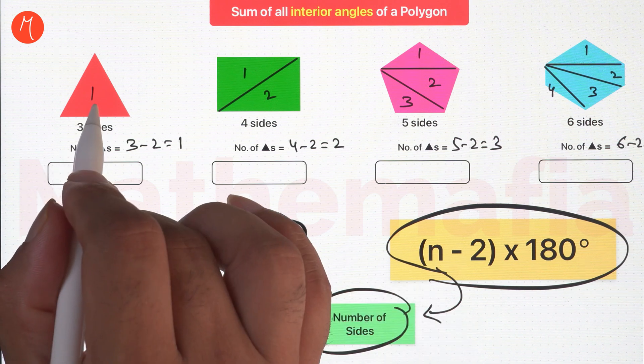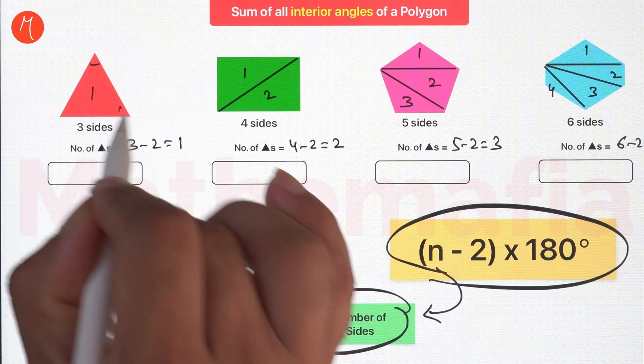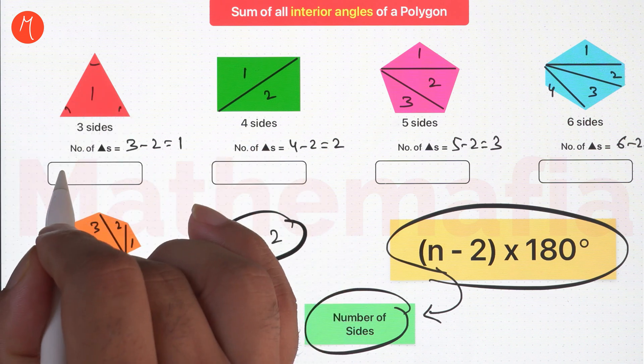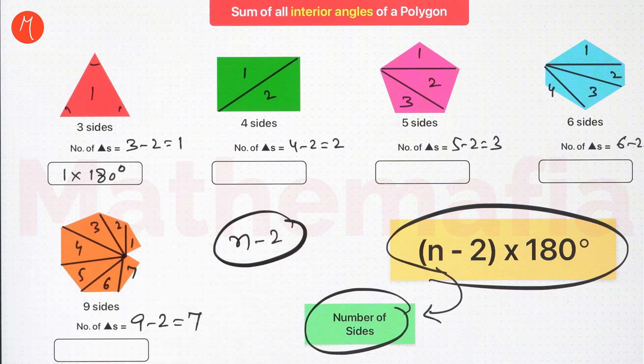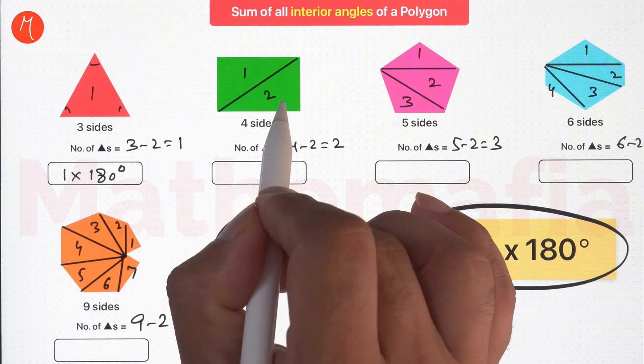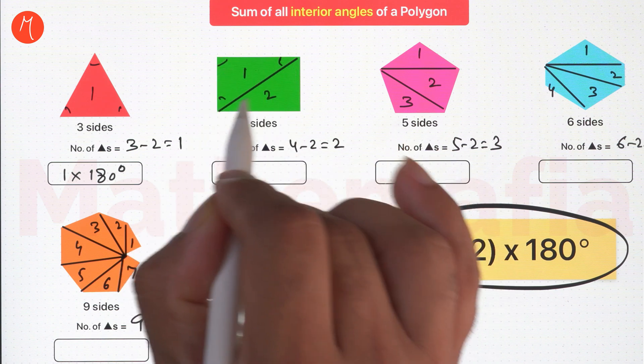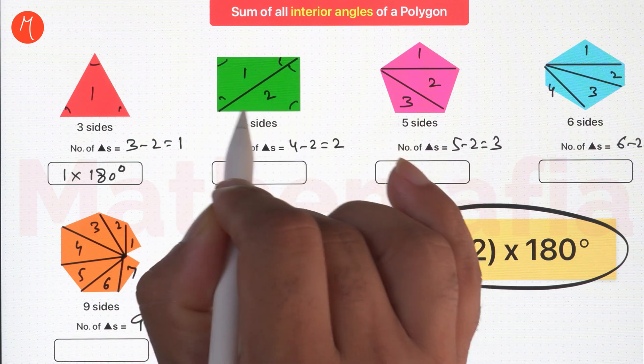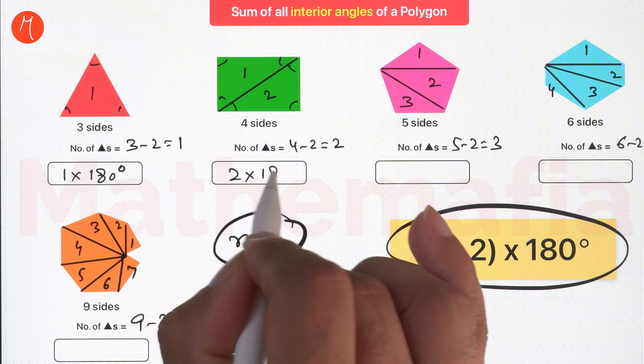Now in this case, we already know the sum of all interior angles of a triangle is 180 degrees, or we can write it as 1 into 180 degrees. In this case, the sum of all interior angles of the rectangle is equal to sum of all the interior angles of both these triangles. And that is 2 into 180 degrees.